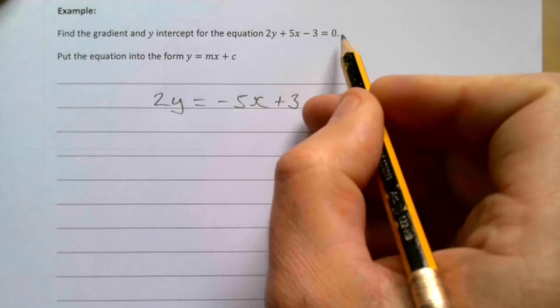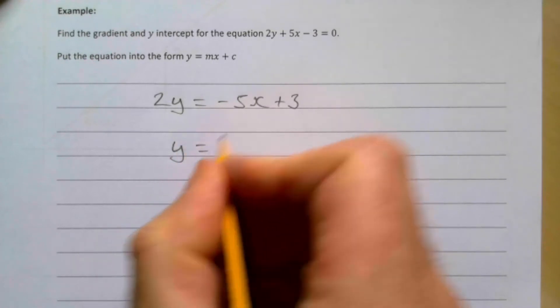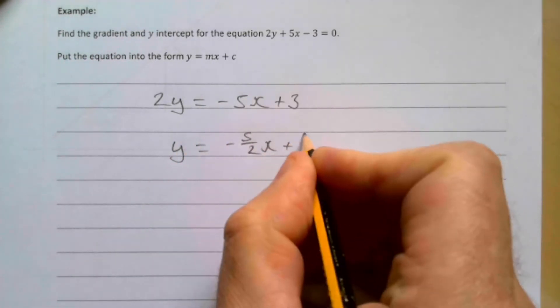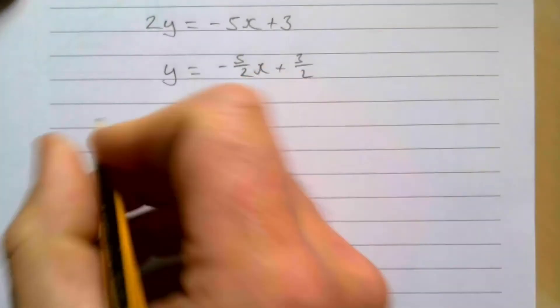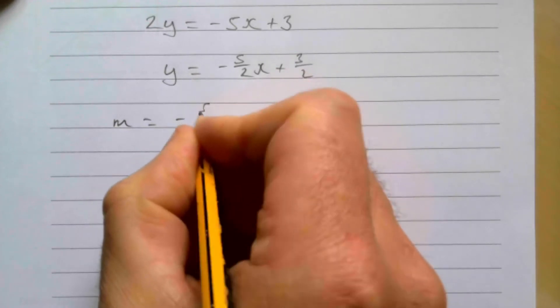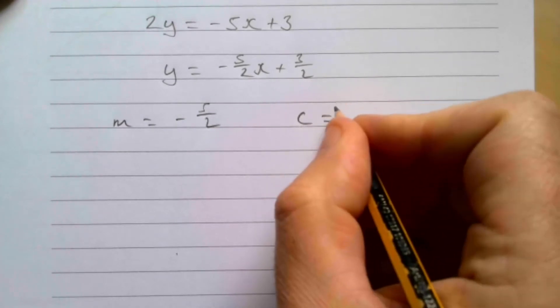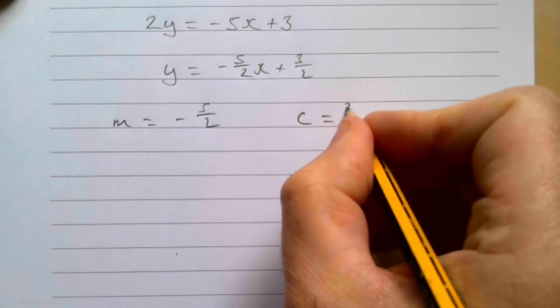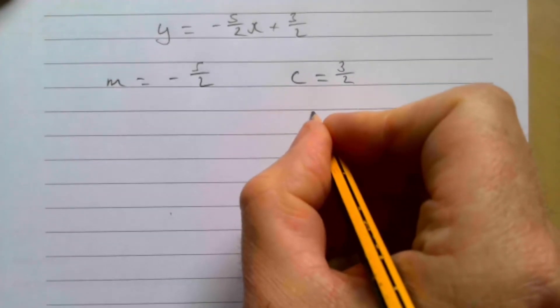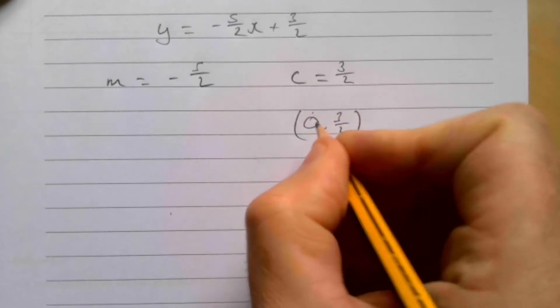Now dividing both sides by 2, I've got y = -5/2x + 3/2. That means my gradient m is equal to -5/2. And it means that c then, where it crosses the y-axis, is going to be at the point 3/2. If you want that as a coordinate, it would be 0, 3/2.